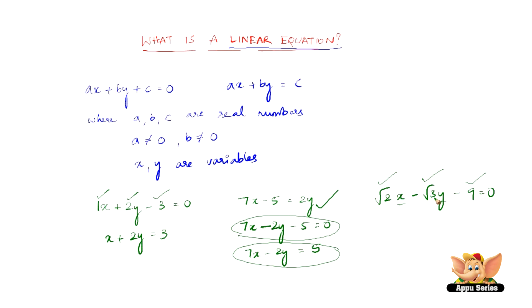since a and b have got values, they are not equal to 0. So therefore, this also is a linear equation.